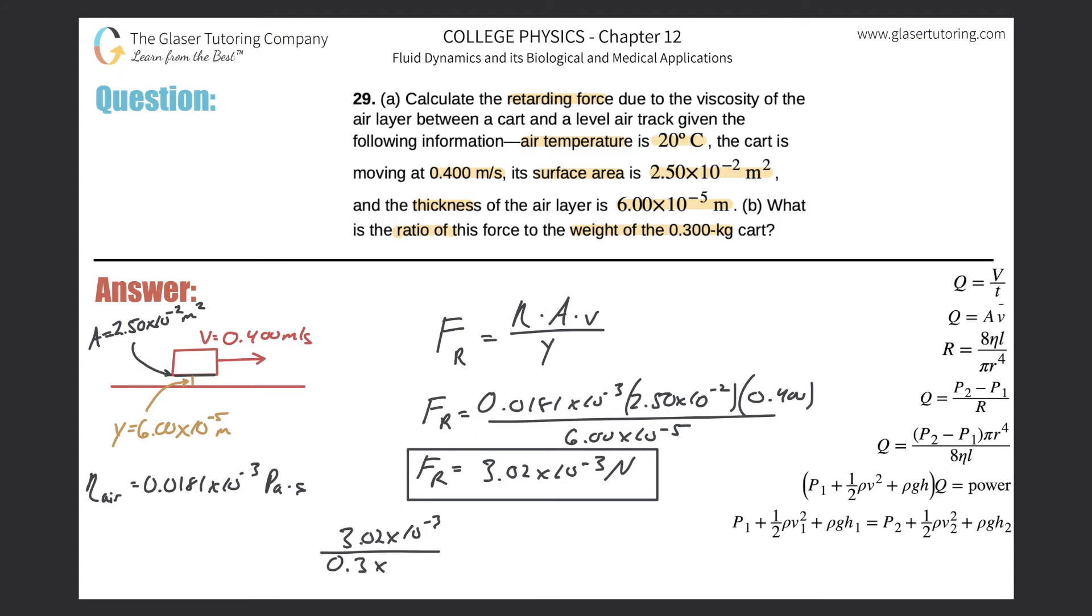The mass of the cart is 0.3 kg, multiply that by gravity—that would be the weight of the cart. Now all we need to do is take this ratio: 3.02 × 10^-3 divided by (0.3 × 9.8). Here we get a fractional value of 0.00103.